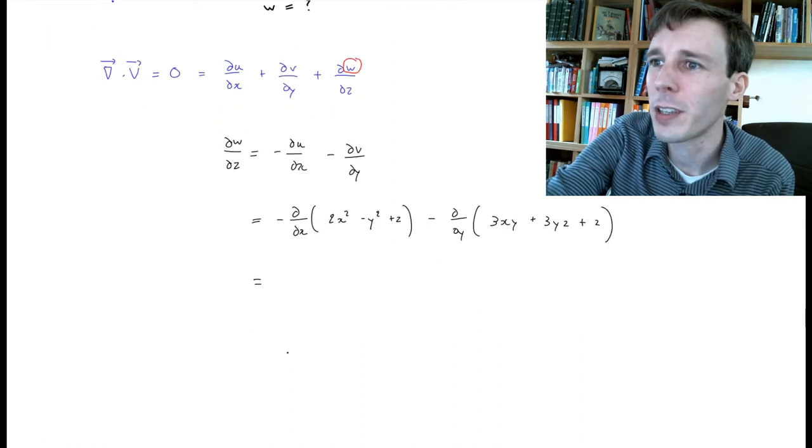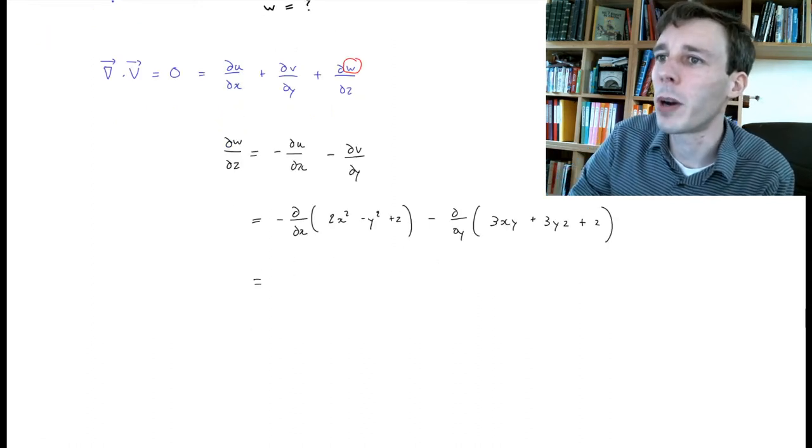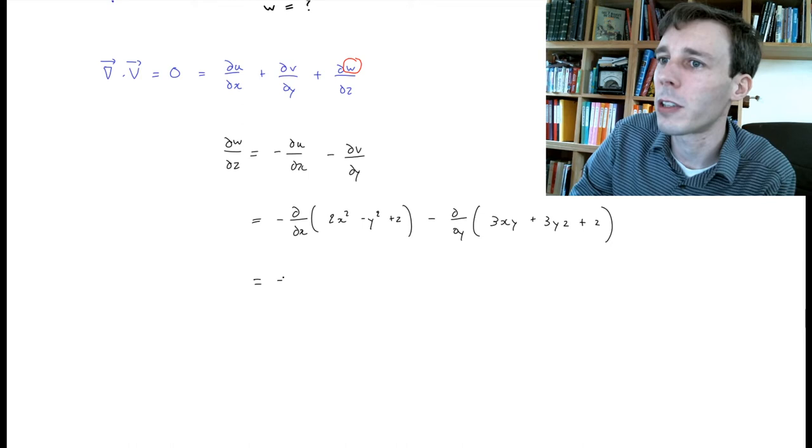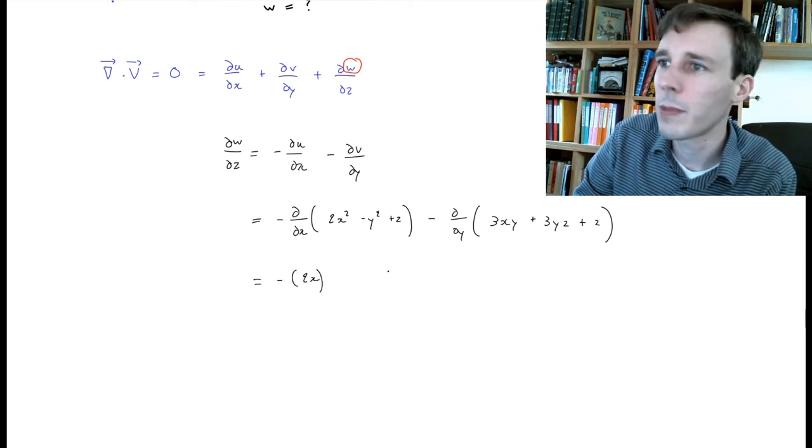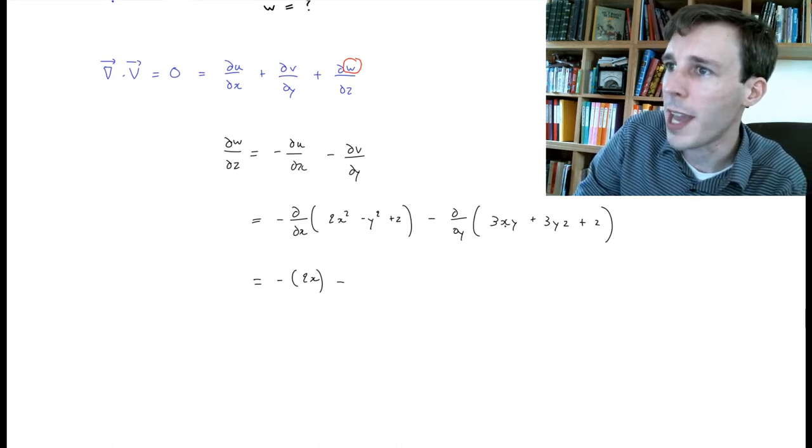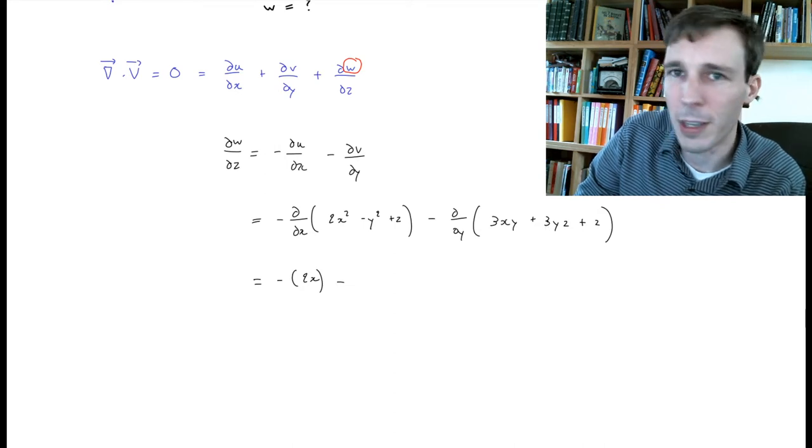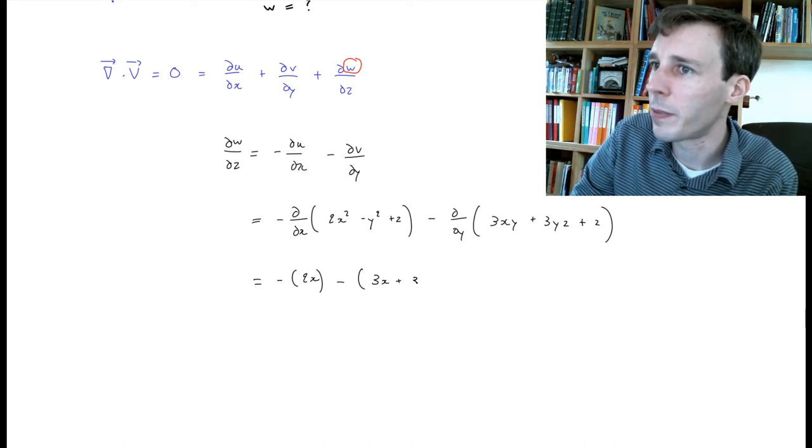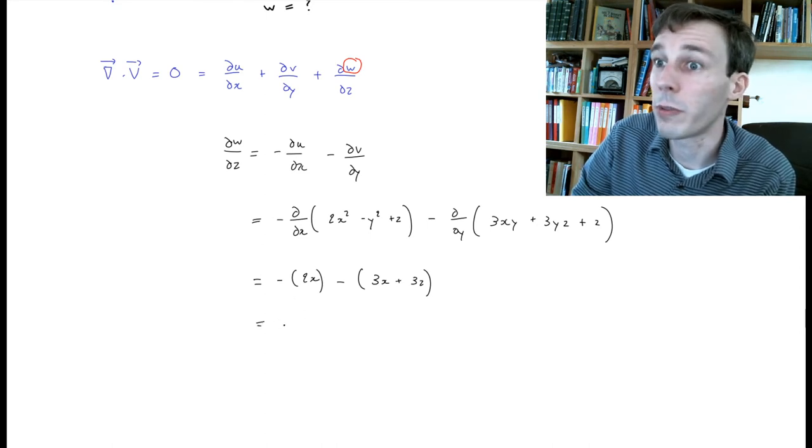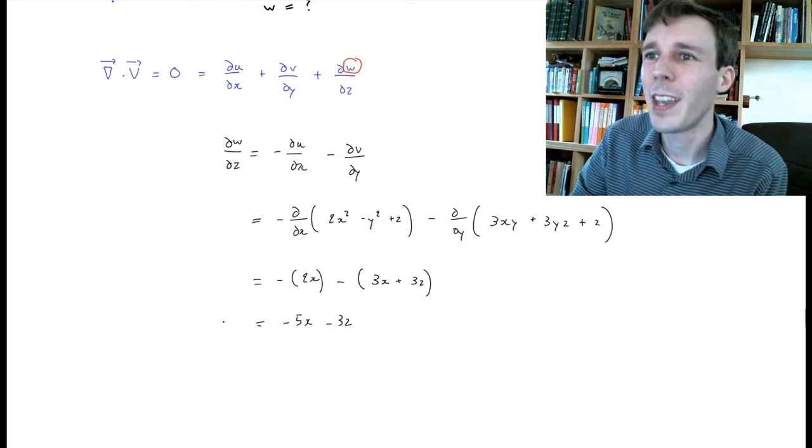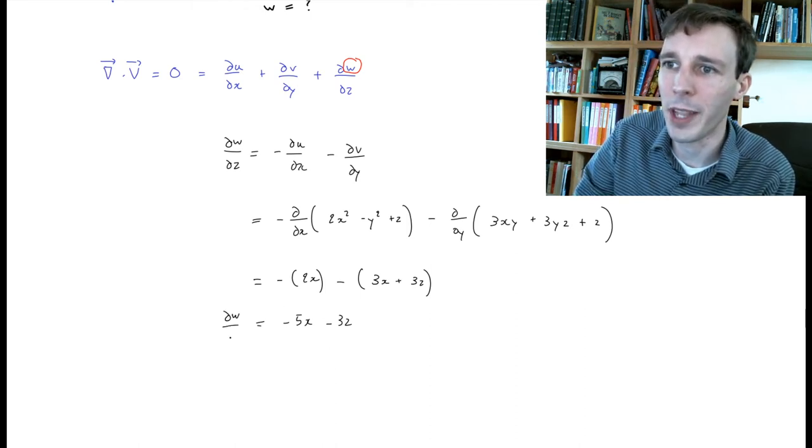Let's carry this out. This is not a very difficult derivation. The partial derivative with respect to x of this whole function is just going to be 2x, so this is going to be minus 2x. And then the partial derivative with respect to y of this whole expression is going to be 3x and then 3z, so that's going to be 3x plus 3z. When we group this together it sums up as minus 5x minus 3z, and this is the partial derivative of w with respect to z.